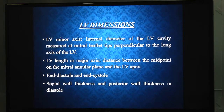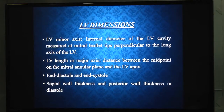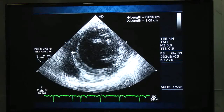The next part of the TEE report covers LV dimension reporting. We report the LV minor axis and LV major axis, taken in both end-diastole and end-systole. The LV minor axis is the internal diameter of the LV cavity measured at the mitral tip, perpendicular to the long axis of the LV. The major axis is the distance between the midpoint of the mitral annular plane to the LV apex. Septal wall thickness and posterior wall thickness are also noted in diastole.